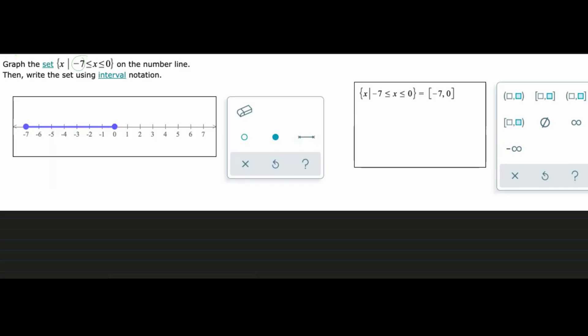So since these are both less than or equal to, we're going to use this filled in circle right here for both of them when we plot it. x has to be between both of them, so that's where this line in the middle comes from.